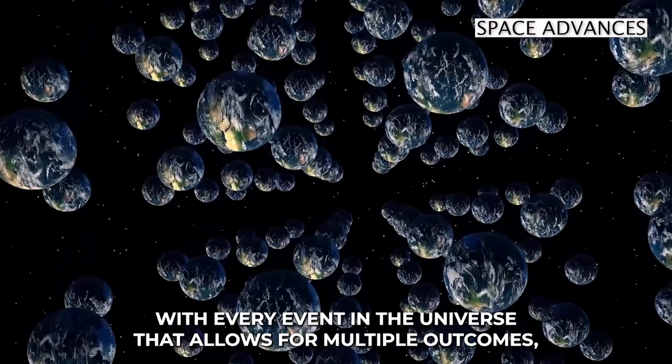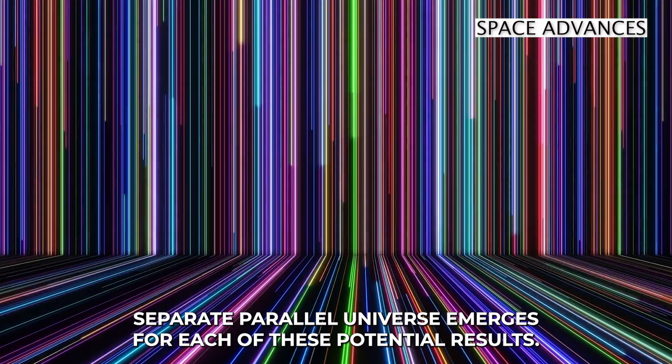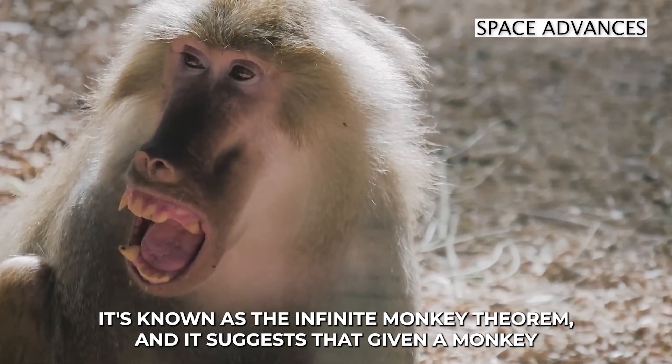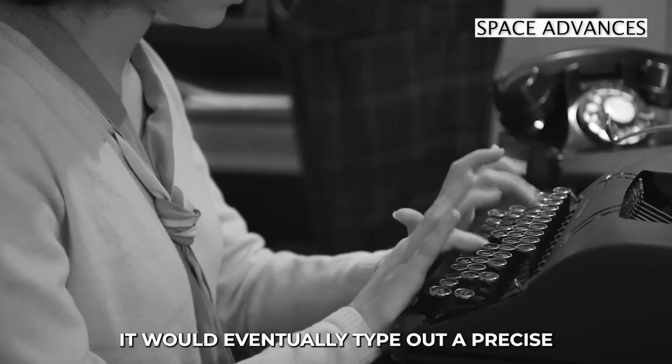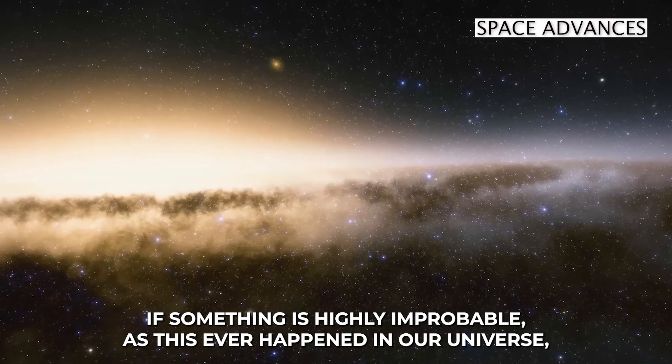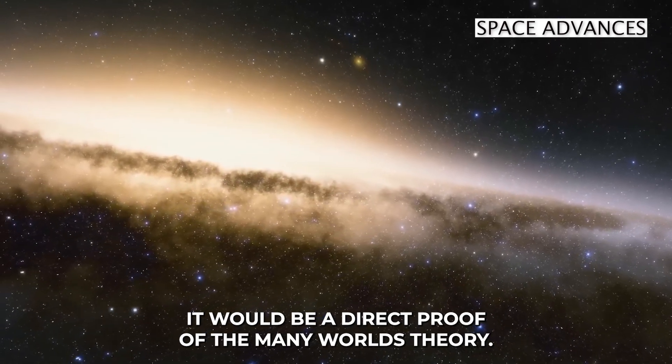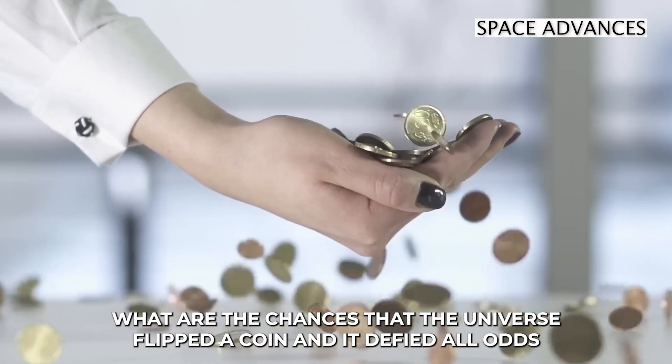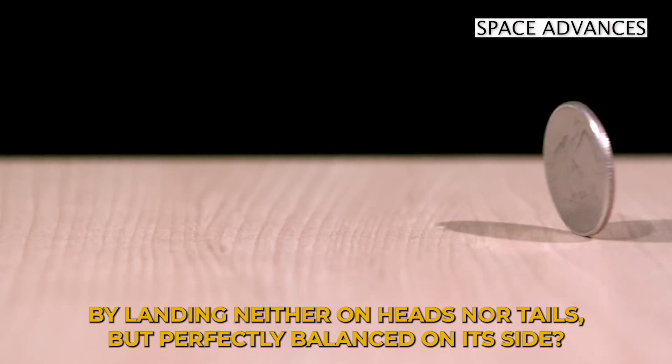What if even right now, with every event in the Universe that allows for multiple outcomes, a separate, parallel universe emerges for each of these potential results? In mathematics, there's a thought experiment on probability. It's known as the infinite monkey theorem, and it suggests that given a monkey has an infinite number of attempts and enough time, it would eventually type out a precise copy of William Shakespeare's works, or just any other piece of literature. If something as highly improbable as this ever happened in our Universe, it would be a direct proof of the many-worlds theory. Next time you encounter an extraordinarily unlikely event, consider this. What are the chances that the Universe flipped a coin, and it defied all odds by landing neither on heads nor tails, but perfectly balanced on its side?